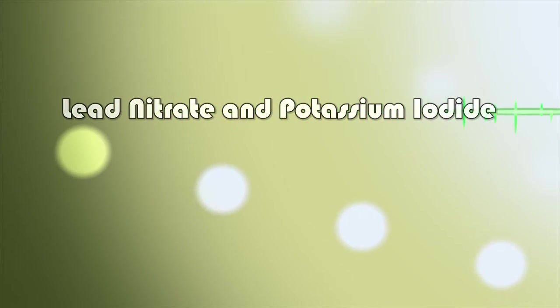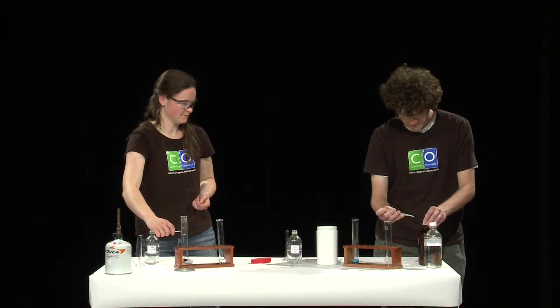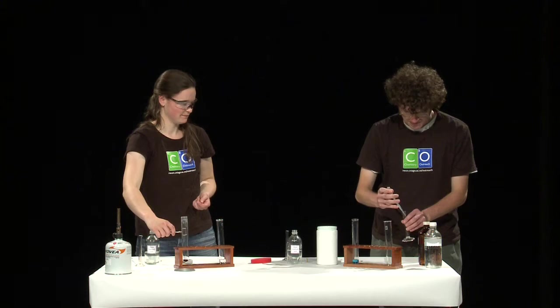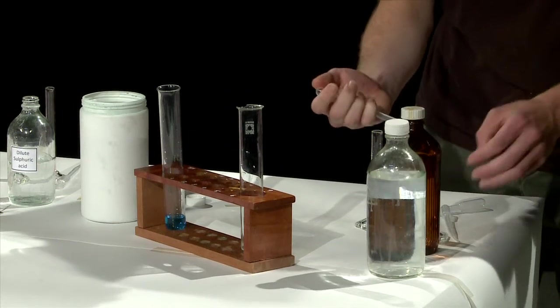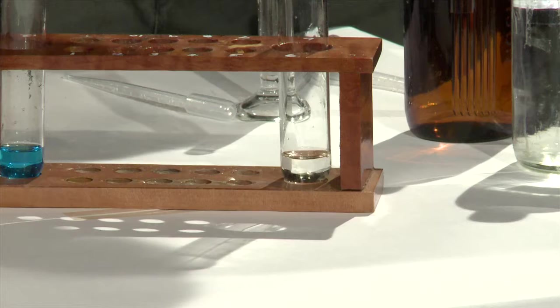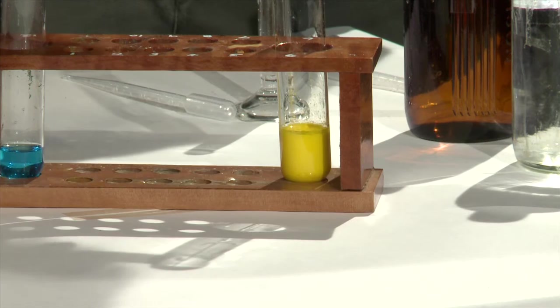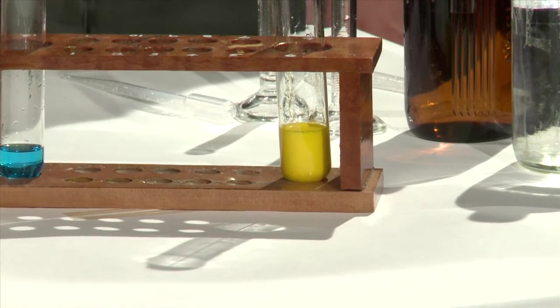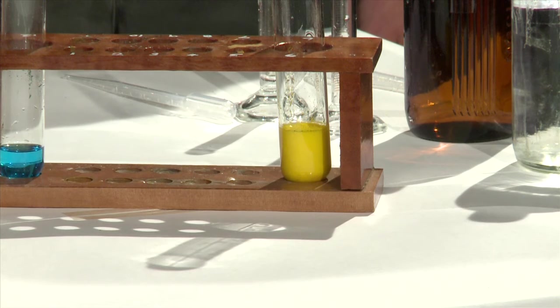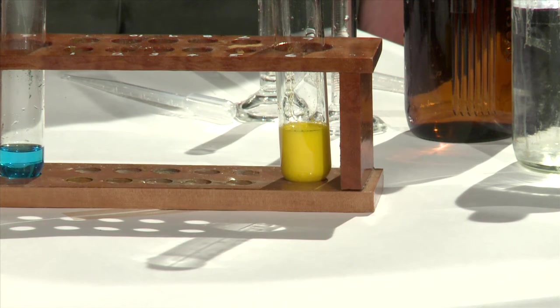Experiment 4. Measure out 10 milliliters of potassium iodide solution and 10 milliliters of lead nitrate solution. Mix the two clear colorless solutions together in a boiling tube. The mixture is cloudy due to there being a solid, a yellow solid inside. This is called a precipitate since it is a solid that has been formed by two solutions mixing together.